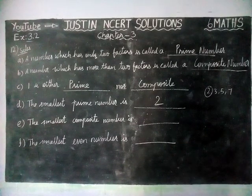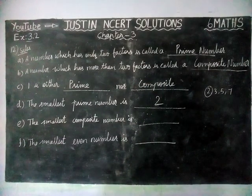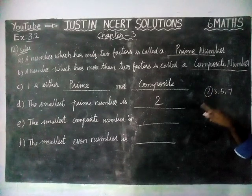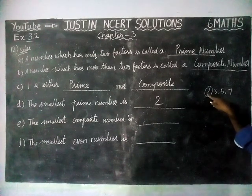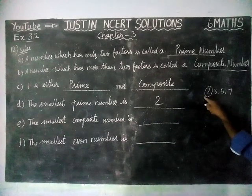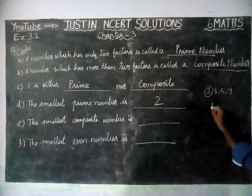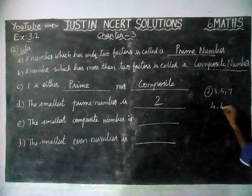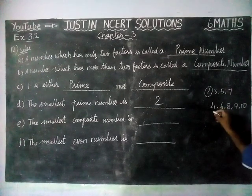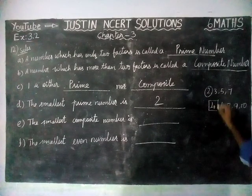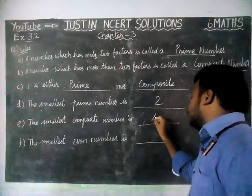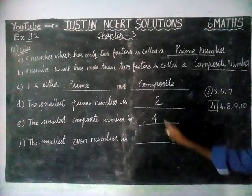And next, the smallest composite number. 1 is neither prime nor composite. 2 is the smallest prime number. 3 is also prime. The composite numbers are 4, 6, 8, 9, 10 — the first number is 4, so the smallest composite number is 4.